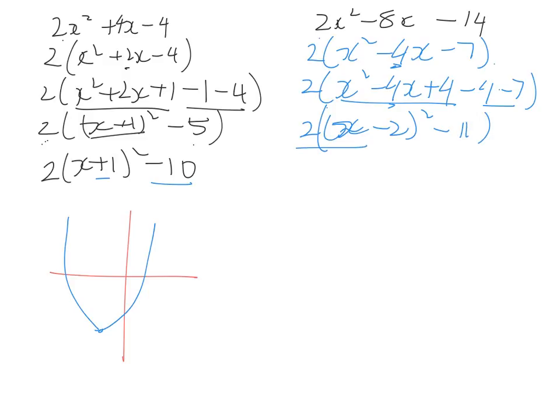Once again, re-expand. So 2(x-2) all squared minus 22. So we've got a turning point at negative 2 and negative 22 of a parabola.